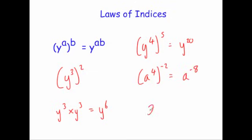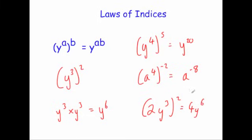Sometimes you get numbers inside the bracket, such as 2y cubed, all squared. Raise the number at the front to the power: 2 squared is 4. Then multiply the powers for y: 3 times 2 is 6. So the answer is 4y to the power of 6. One more example: 3y to the power of 5, all cubed. 3 cubed is 27, and 5 times 3 is 15. So the answer is 27y to the power of 15.